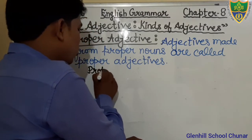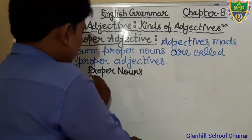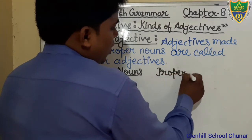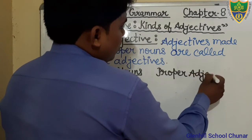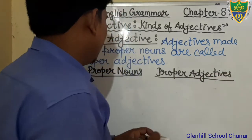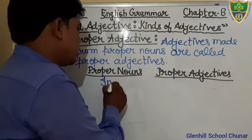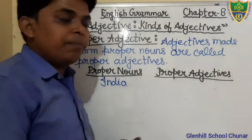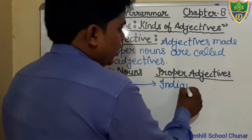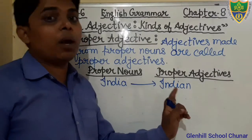Just make two columns: Proper Noun and Proper Adjective. India is a Proper Noun, and Indian is a Proper Adjective.